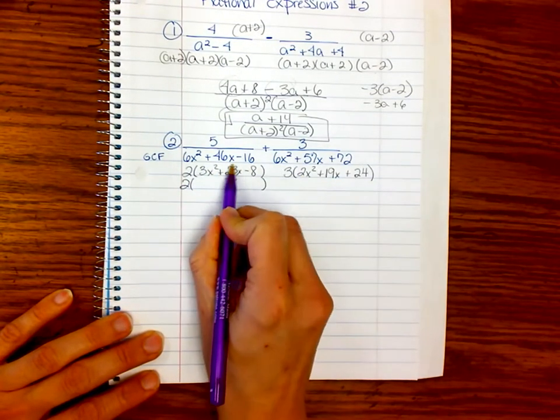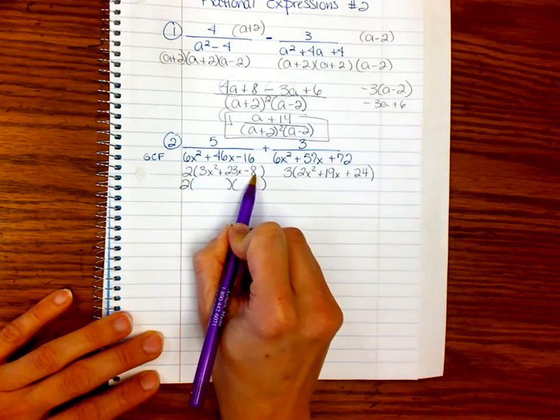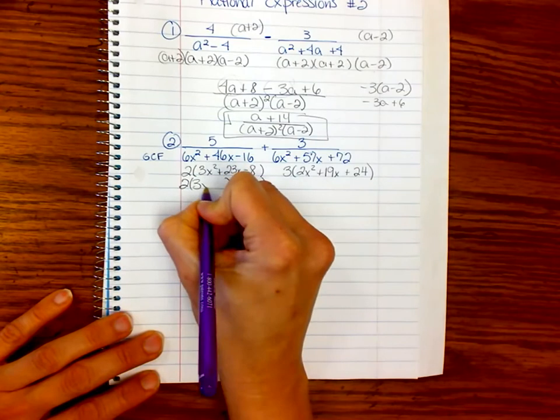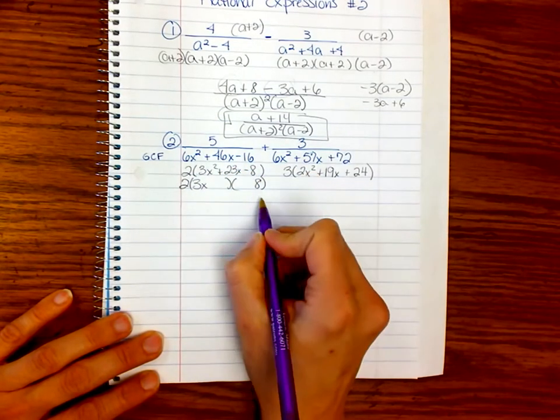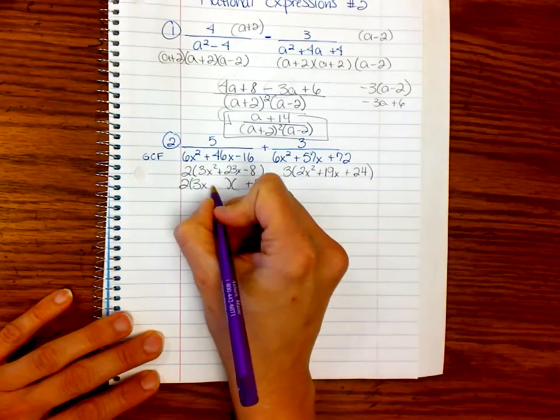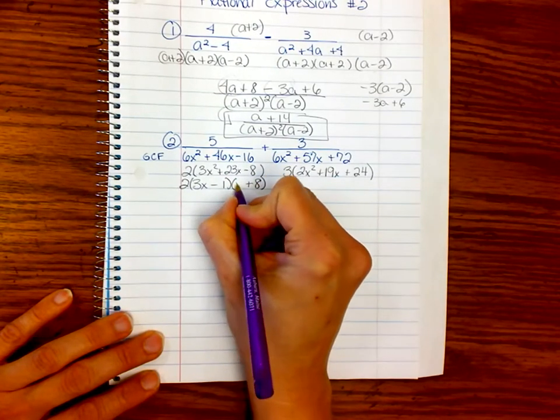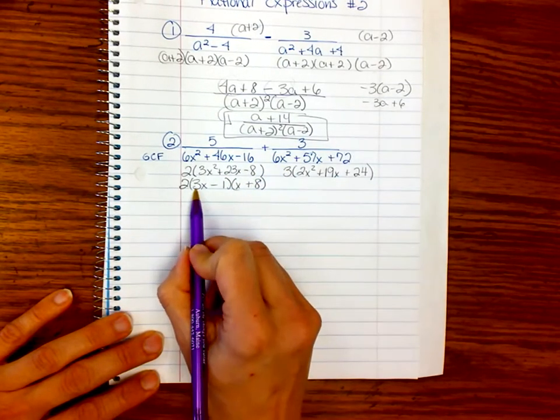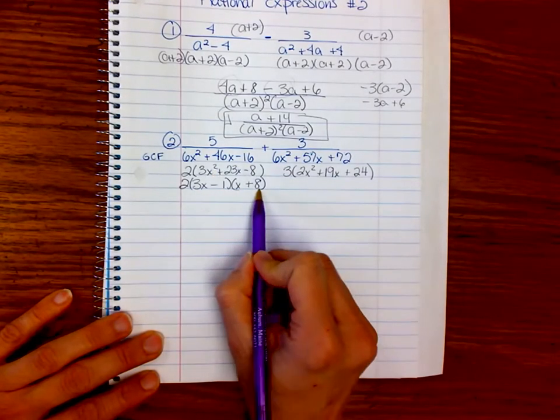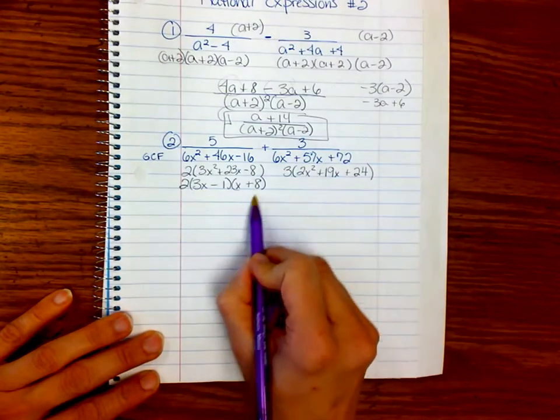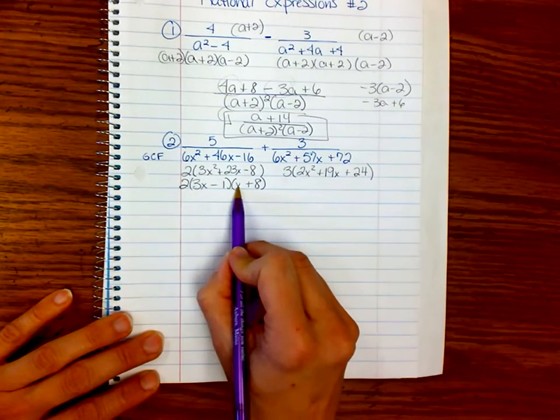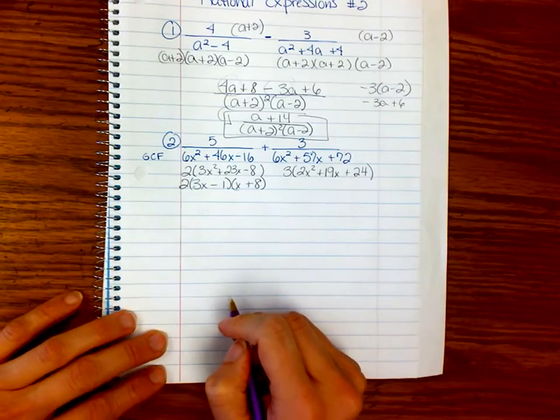So, when this is a 23, and I know that 3 times 8 is 24, and that's one less, then I know my 3 and my 8 have to get together. So, I know 3 and 8 are going to go there. And I know it's positive. The 23 is positive. So, I know I need a 1 there. So, let's just check it. 3x times x is 3x squared. Negative 1 times 8 is negative 8. And 24, which is the 3x times 8. 24x minus 1x gets me my 23x.